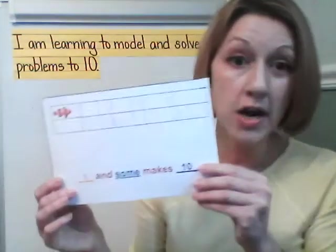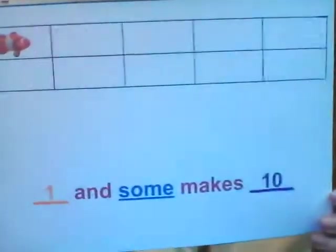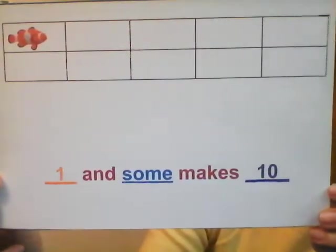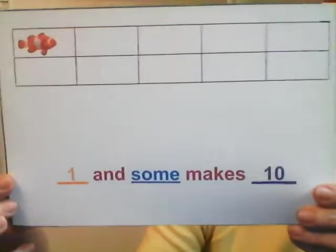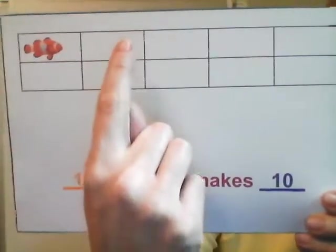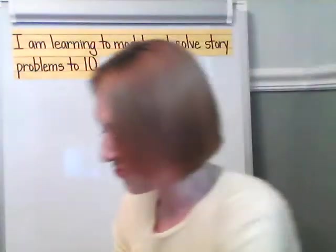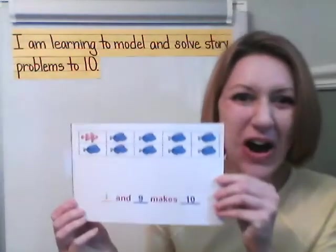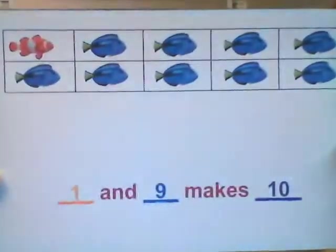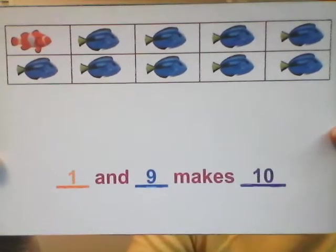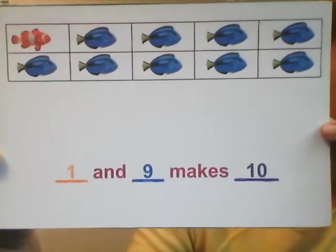What if we did one orange fish? If we did one orange fish and some blue fish makes 10, I wonder how many blue fish there would be. Count the spaces with me: 1, 2, 3, 4, 5, 6, 7, 8, 9. Did you think one and nine too? You are right! There is one orange fish and nine blue fish. One and nine makes 10.